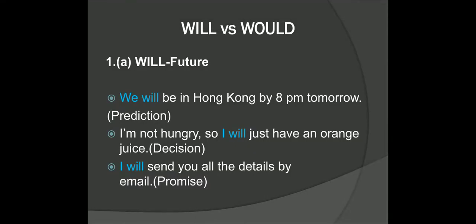There are three main differences between will and would. Let's start with the most basic use of the two verbs. We use will to talk about the future. One very common use is to make a prediction or say what we expect to happen in the future.